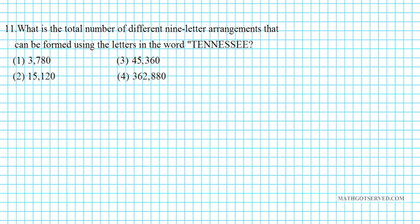It reads: what is the total number of different nine-letter arrangements that can be formed using the letters of the word Tennessee? This problem involves permutation with repetitions.